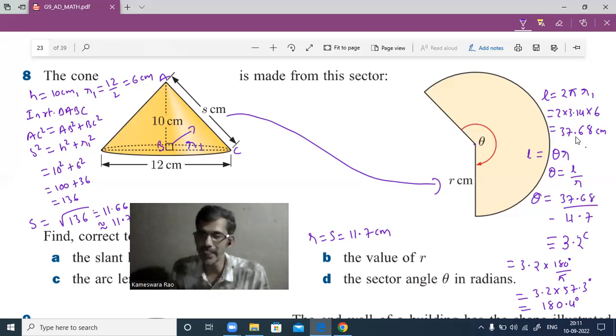If you use radians, it's 3.2. In degrees, it's 180.4. Lot of learning is there, very interesting. Please like and subscribe for more videos.